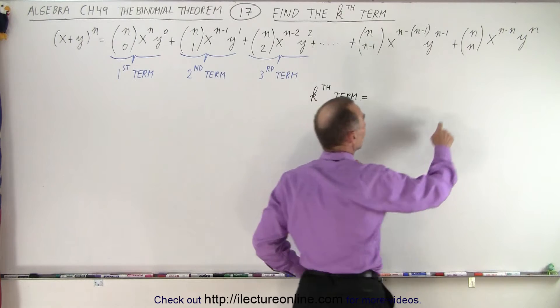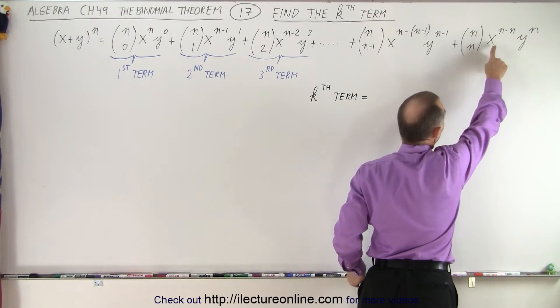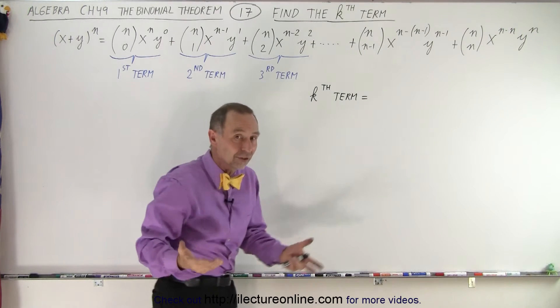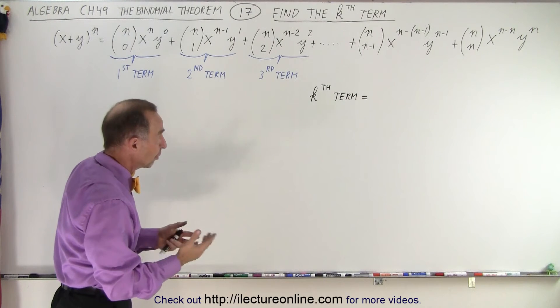All the way to the last term where we end up with n choose n, x^(n-n) y^n. And of course, n minus n is 0, so x^0 equals 1, and that x term would disappear.